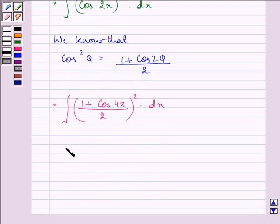Now here we have integral of 1 plus cos 4x, the whole square, can be written as 1 plus 2 cos 4x plus cos square 4x, divided by 4 into dx.